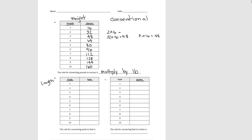Now we're going to look at measures of length — yards and feet. The basic comparison we need to know is that there are 3 feet in a yard. In the same way as with weight, we have two strategies. As we increase by yards, we could simply multiply the number of yards by 3: 2 times 3 is 6, 3 times 3 is 9, and so on.